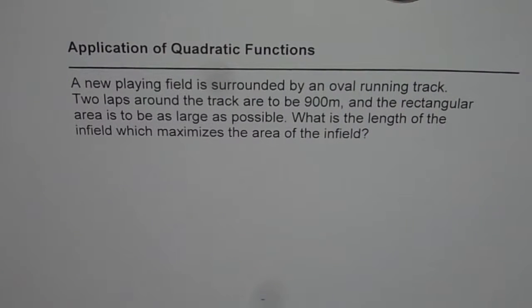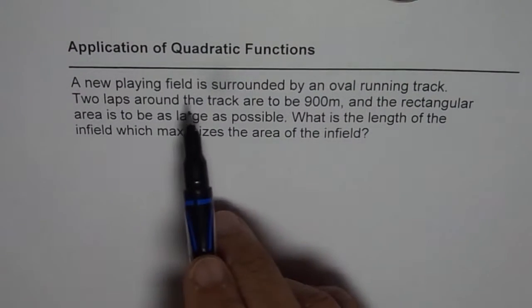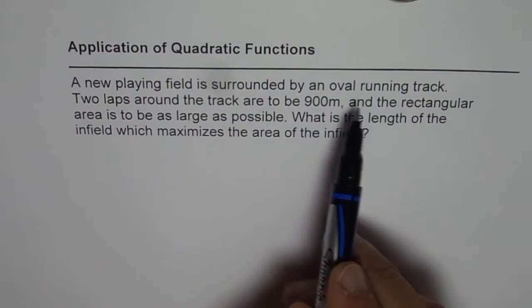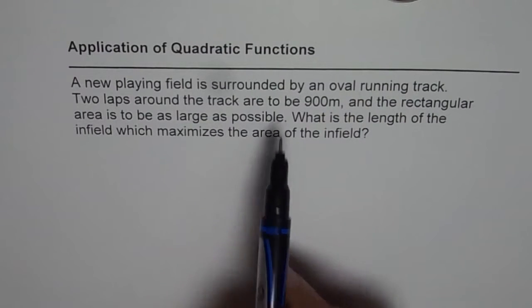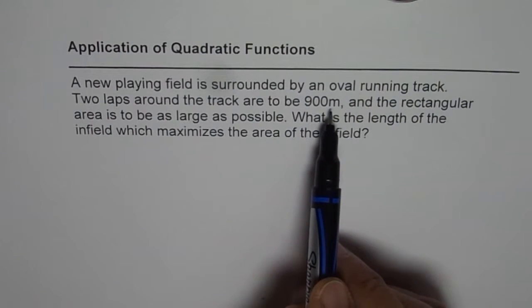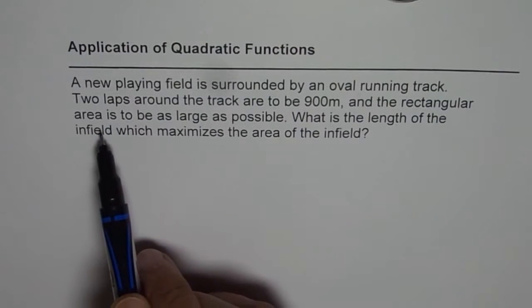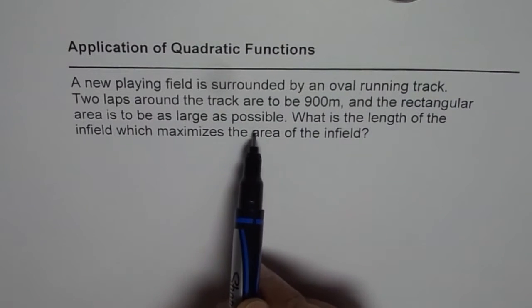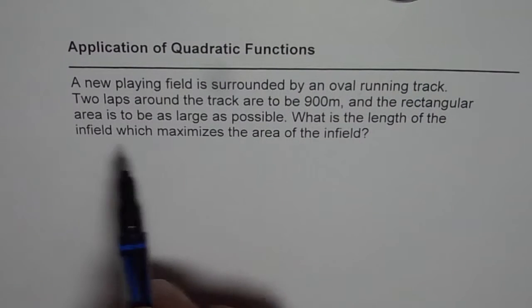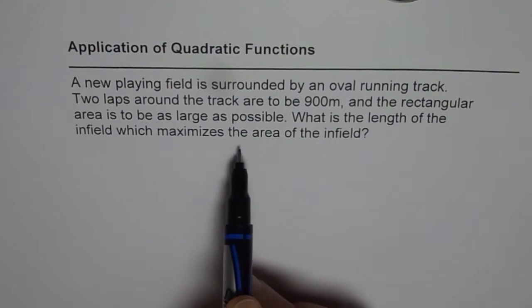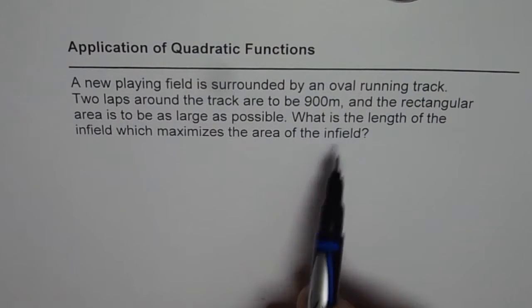I'm Anil Kumar and here is an application question on quadratic functions. A new playing field is surrounded by an oval running track. Two laps around the track are to be 900 meters and the rectangular area is to be as large as possible.